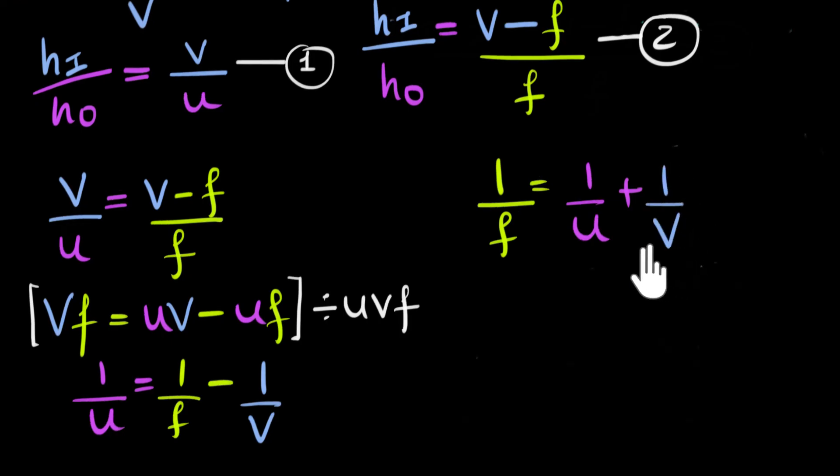And there we have it. Given F and U, we can now calculate the image distance from this. And if we substitute that image distance in equation one, we can now calculate what the height of the image is. So, there it is.